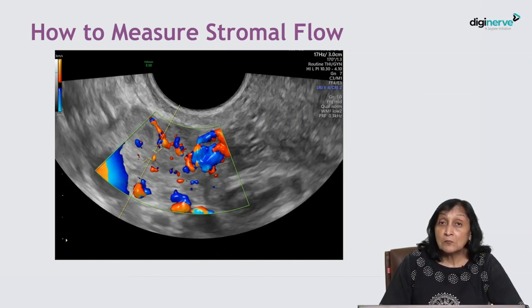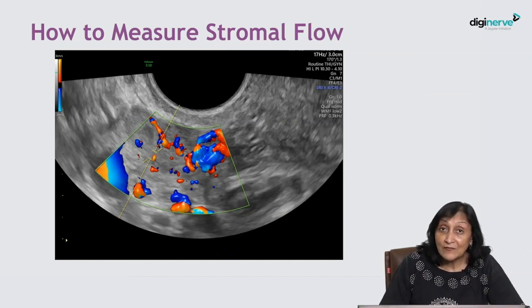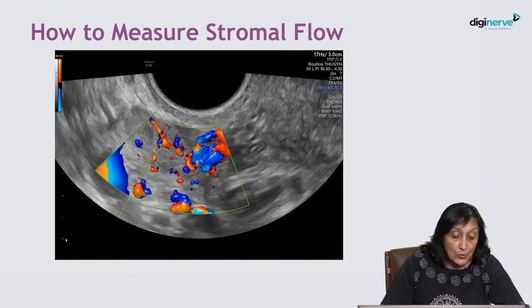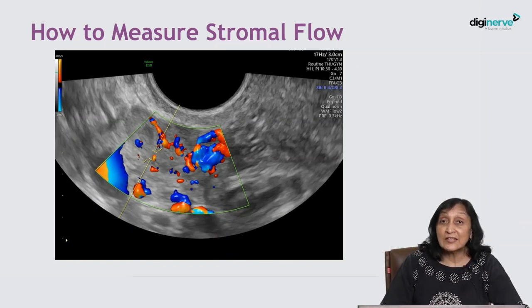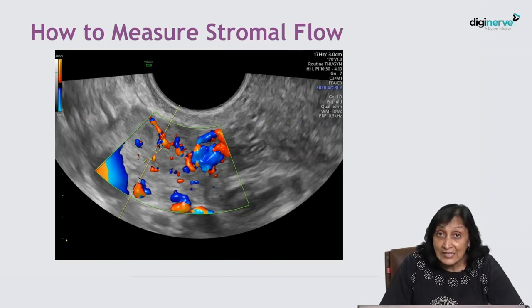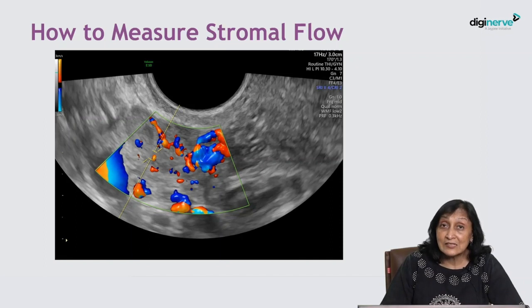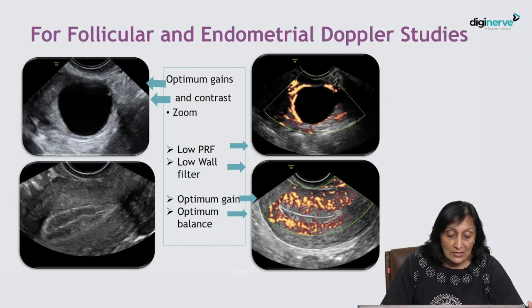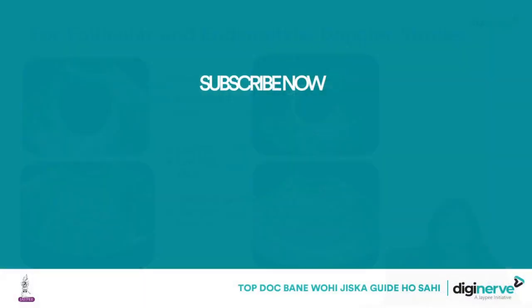When there are multiple vessels and you have taken multiple measurements, you can then select the vessel that has the lowest RI and the highest PSV — and that is your stromal flow.